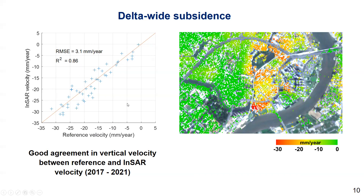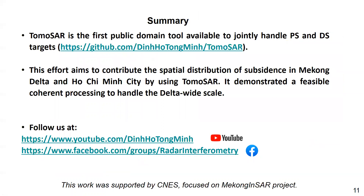For validation, we compare the InSAR results with reference velocity measurements and find a good agreement within three millimeters per year. In summary, ToMoSAR is the first public domain tool available to jointly handle PS and DS targets. This effort aims to contribute to mapping the spatial distribution of subsidence in the Mekong Delta and Ho Chi Minh City. ToMoSAR demonstrates a feasible coherent processing approach to handle Delta-wide scale analysis. Comments and questions are welcome in the Radar Interferometry Facebook group. Thank you for your attention.